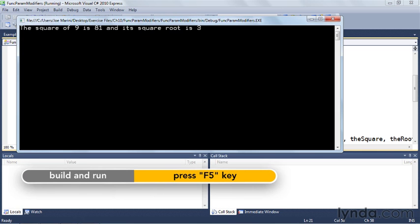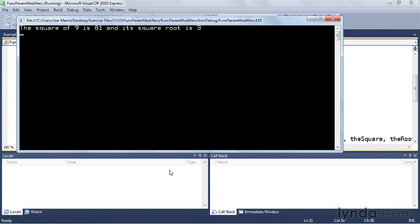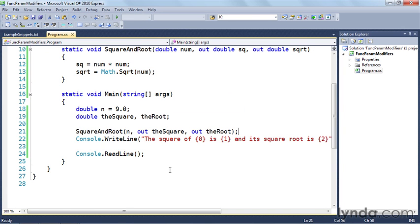You can see that the square of 9 is 81 and its square root is 3, so it works just as we expected it to. And you can use the out keyword and the ref keywords to change the way that parameters are passed to and from functions.